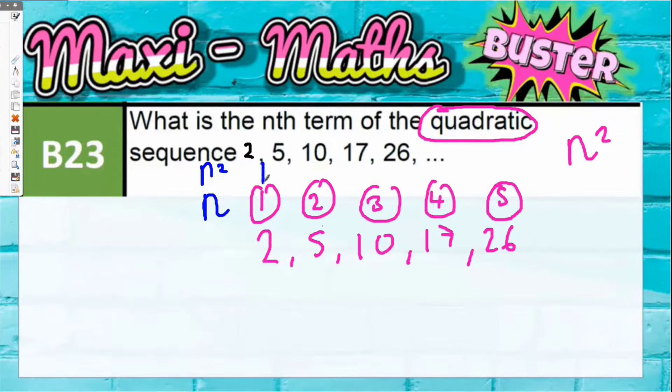So 1 squared is 1, 2 squared is 4, 3 squared is 9, 4 squared is 16, 5 squared is 25.